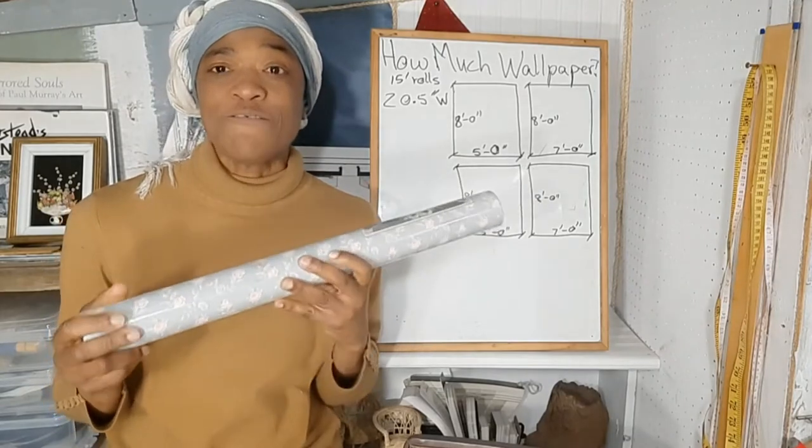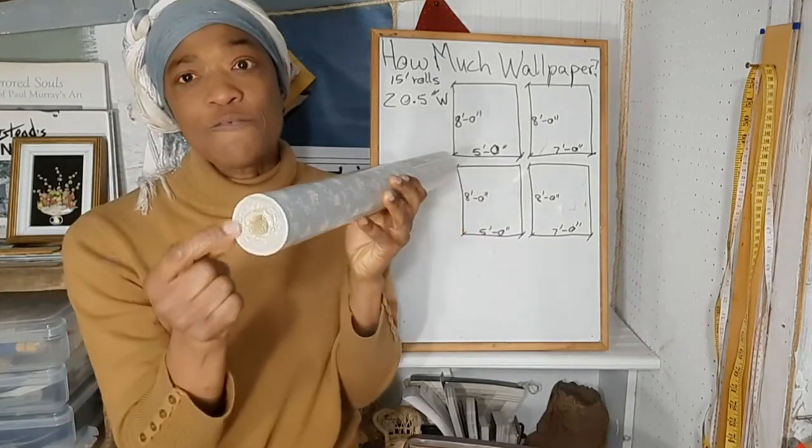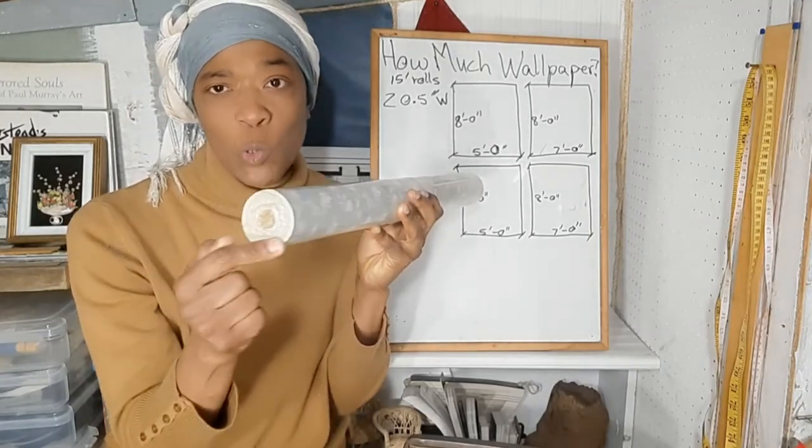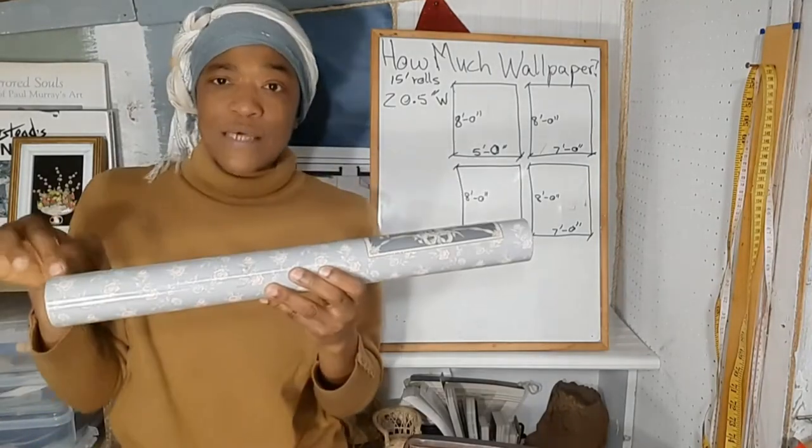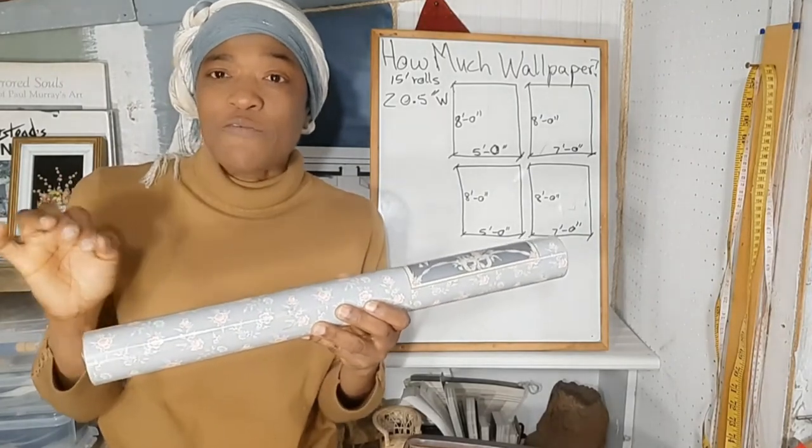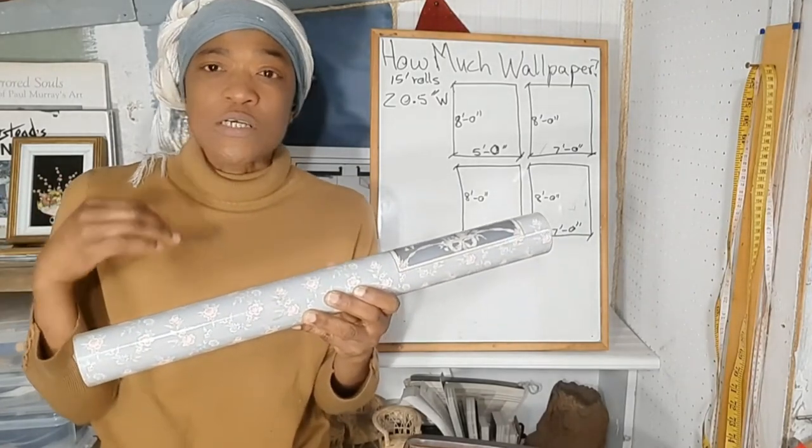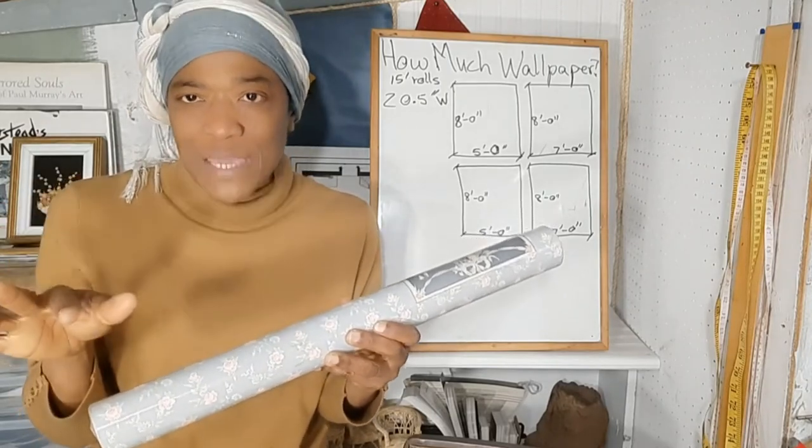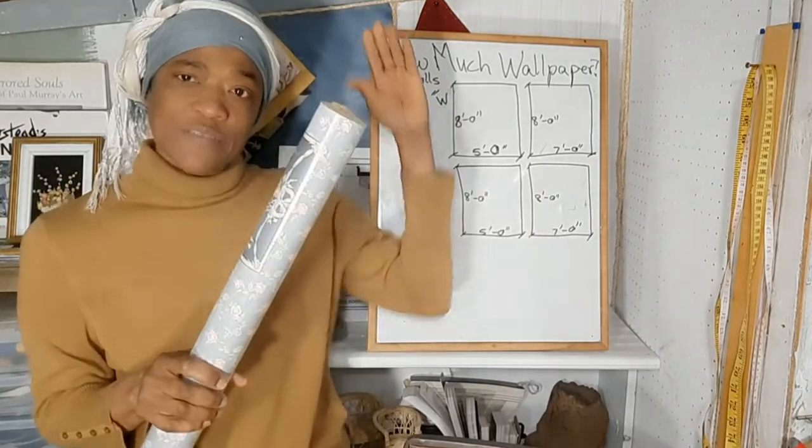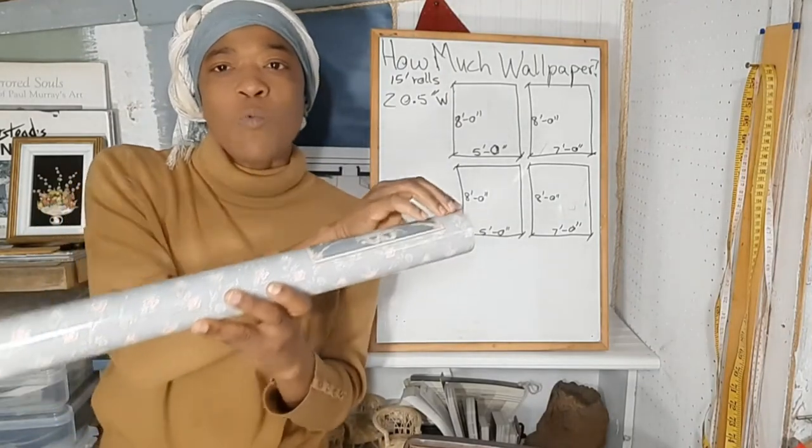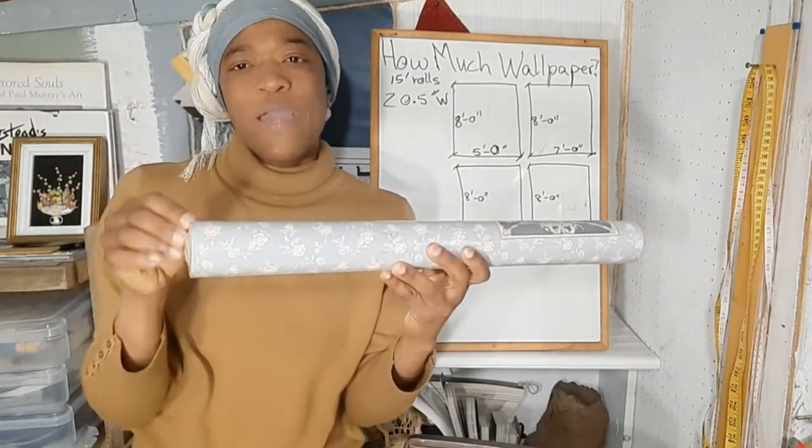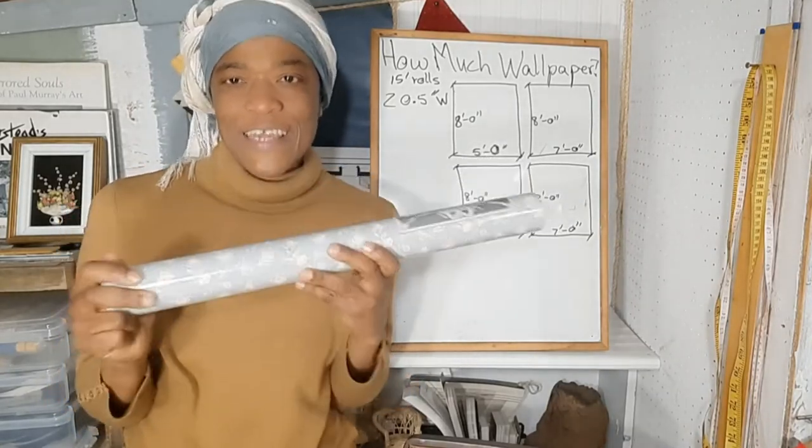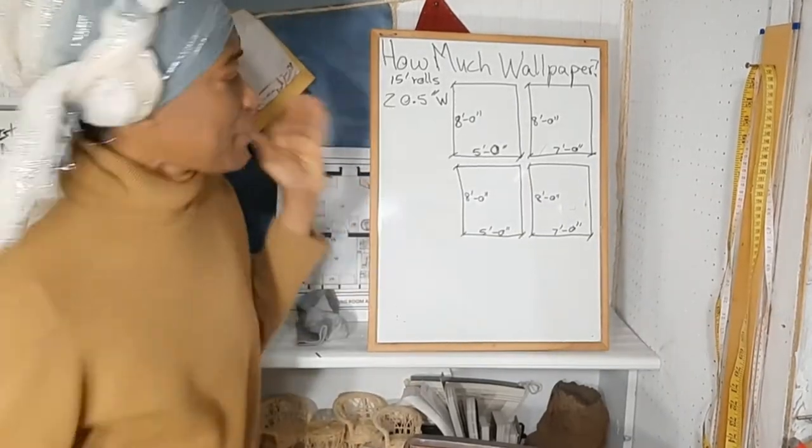Now generally, wallpaper comes in 15 feet lengths, so there would be 15 feet of wallpaper in this roll. And the widths sometimes vary—20.5, 24 inches, 27 inches—depending on where they are made. For the purpose of this lesson, we will use a wallpaper that has a width of 20.5 inches.